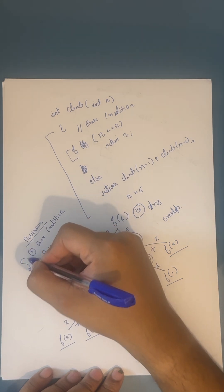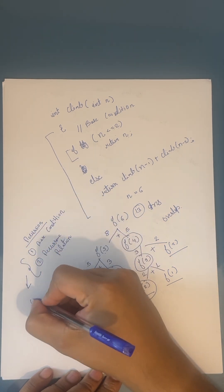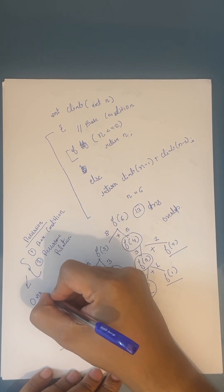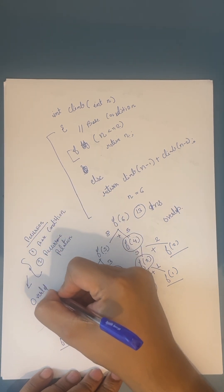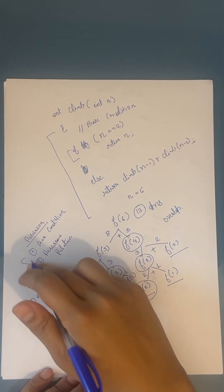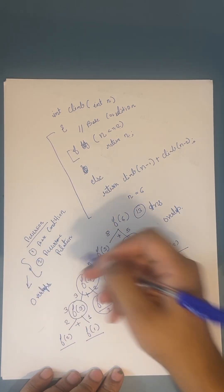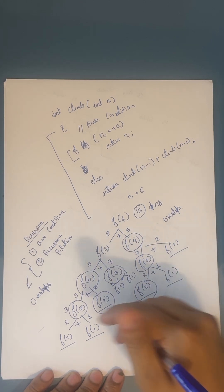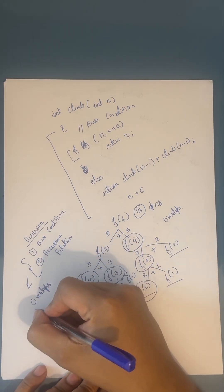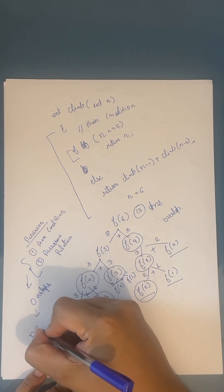Now to call it a dynamic programming solution, you should have overlapping subproblems. If you see in this case, with these two conditions, you see overlaps between your functions — so then it can be solved by DP.